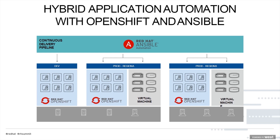This continuous delivery pipeline with Ansible and OpenShift is one way of showing how you can build out these environments and continue to monitor them and roll them out with whatever changes in your application itself, within configuration, and within changes of security policies.